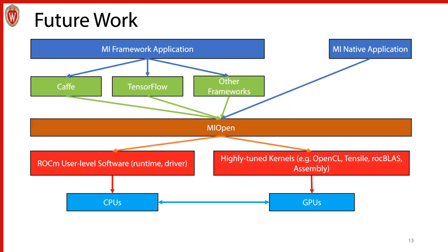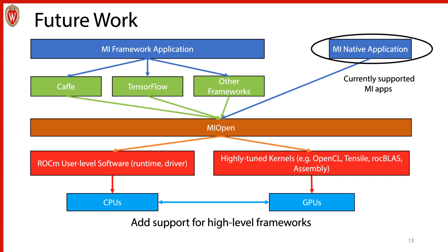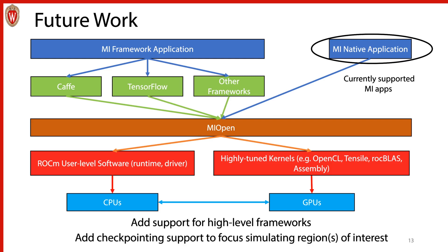Looking at all the different possible types of machine learning applications, in this work we've been focused on working with native applications to get MIOpen working. The next step is to try and work on something like Caffe, TensorFlow, or PyTorch. Because we have the base layer of MIOpen working, we have a good starting point. However, whenever you add a new framework or library, there are always new interactions to test. If we get support for these high-level frameworks working, we also want to extend checkpointing support to work with the GPU model, as machine learning frameworks are used to create very large networks that can take hours to weeks to run on real hardware. By extending checkpointing support, we can focus on simulating the regions of interest rather than the entire application.